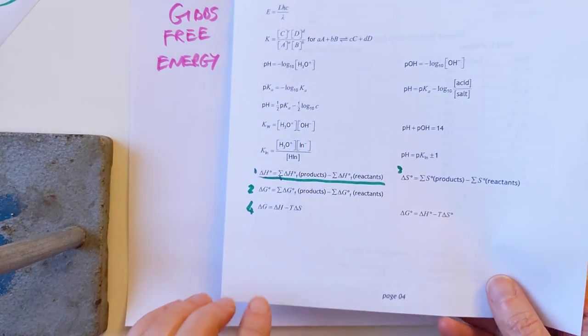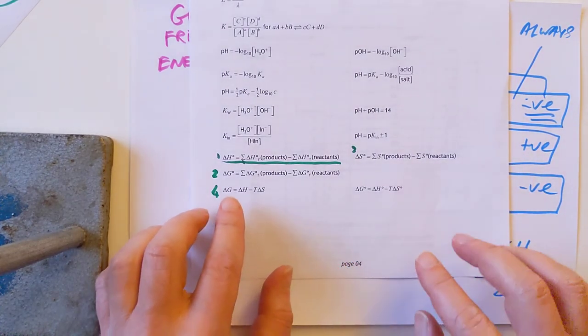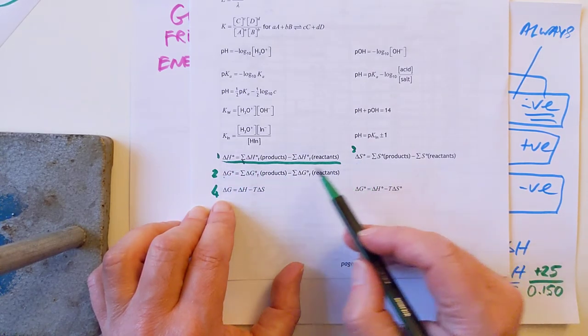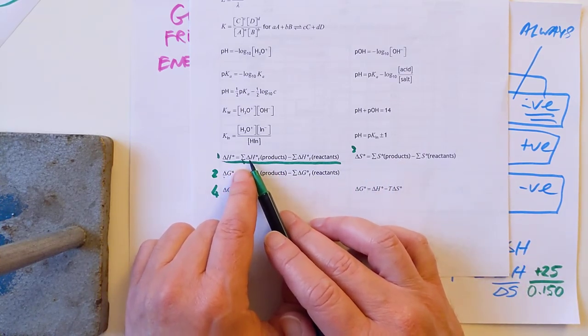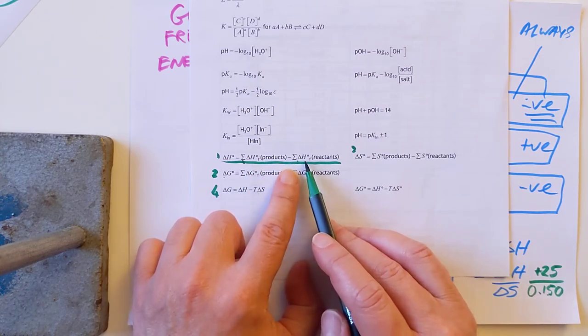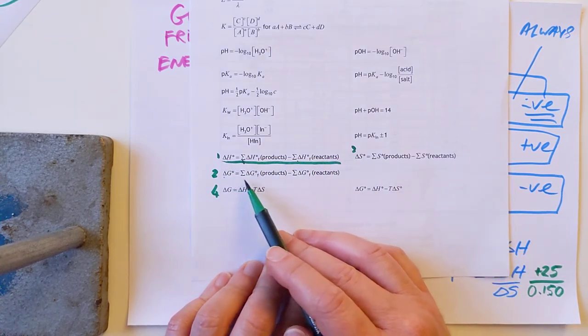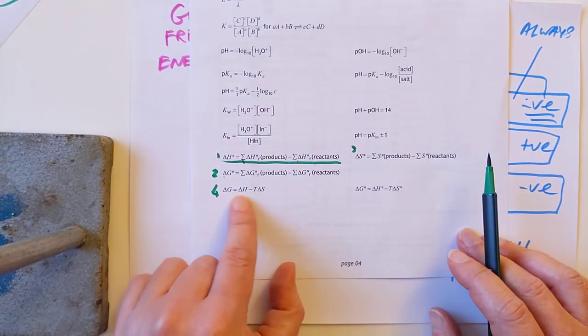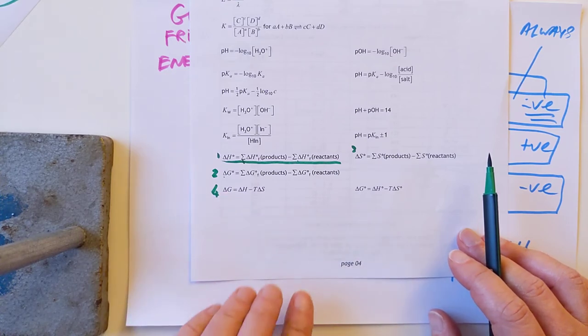There is one thing to be wary of. Units can be tricky here because entropy is in joules per Kelvin and enthalpy is in kilojoules per Kelvin. So you could end up having say plus 25 for the delta H, this could be perhaps 150, but this is joules per Kelvin, that's kilojoules. So you actually end up with 25 over 0.15. That's joules into kilojoules, I've divided by a thousand.